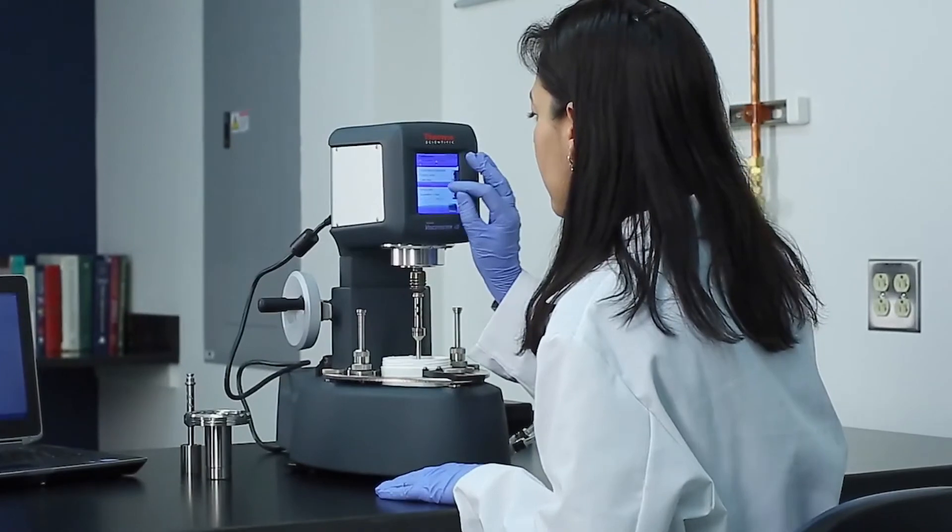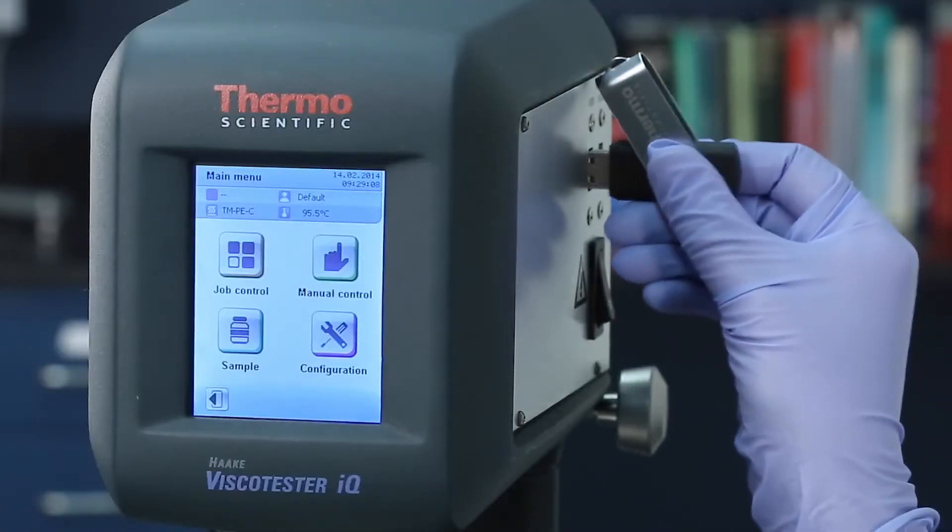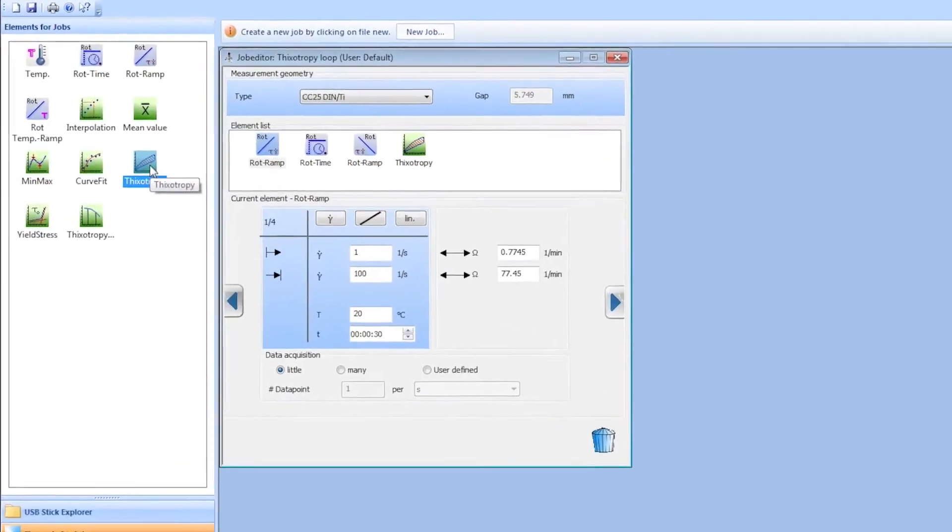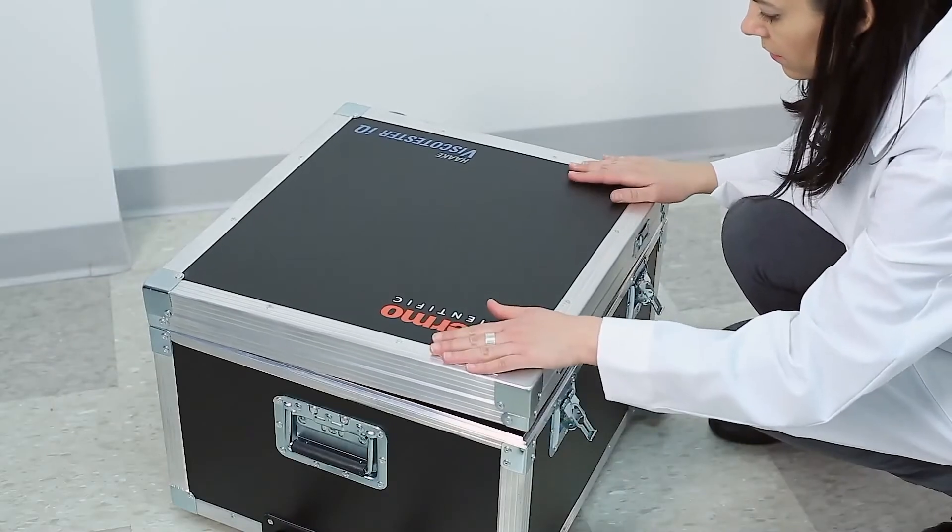The Haka Viscotester IQ rheometer is the instrument of choice for acquiring simple viscosity curves or for complex rheological investigations. Used as a standalone unit or controlled by software.